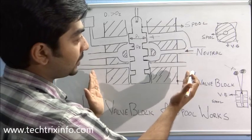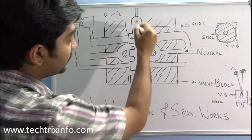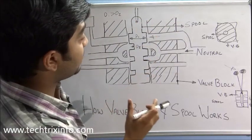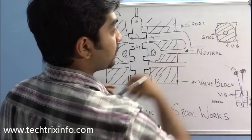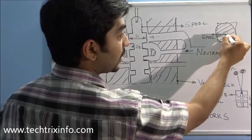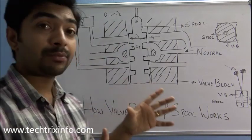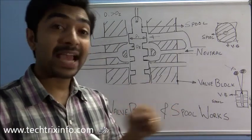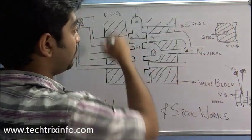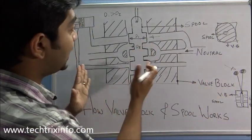Now let's have a closer look at the valve block. Here we have the valve block with the spool at the center. From the top view, you can see the valve block with the spool in the center. There will be many spools if the hydraulic circuit has many actuators or hydraulic rams, resulting in a bigger valve block with many spools and many galleries inside.